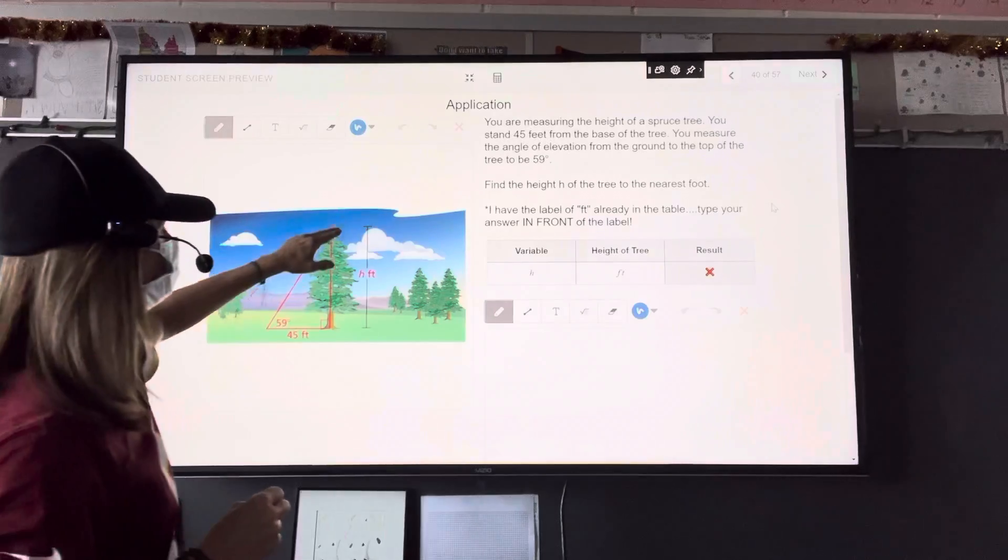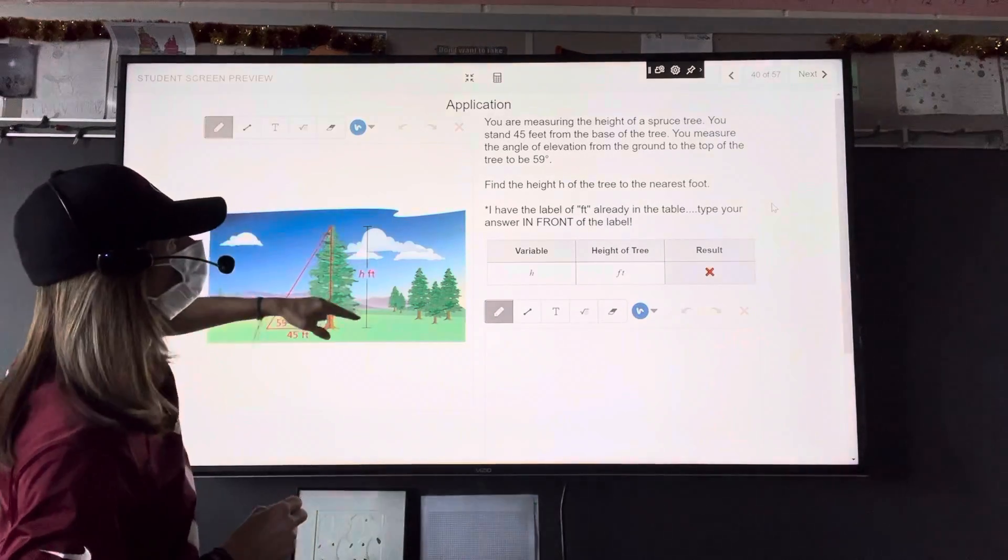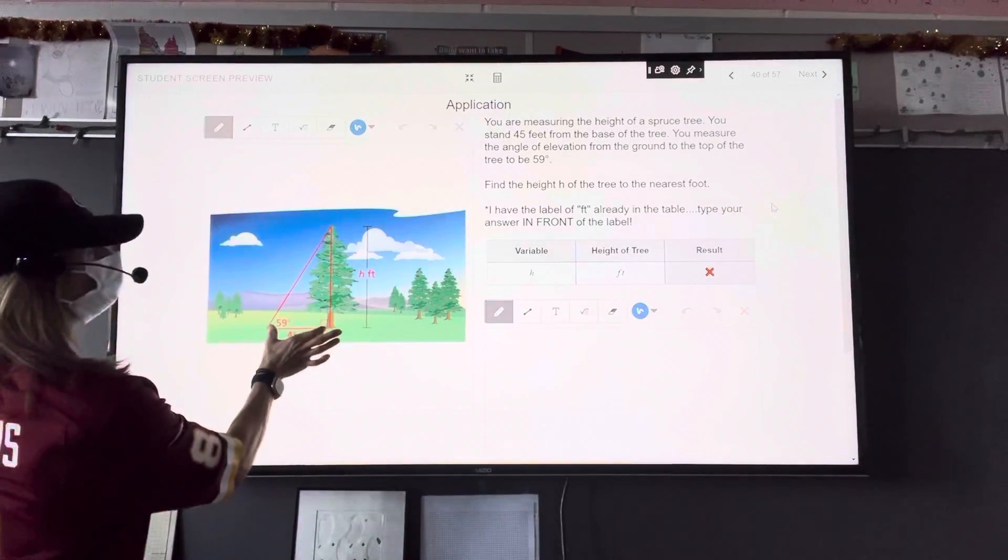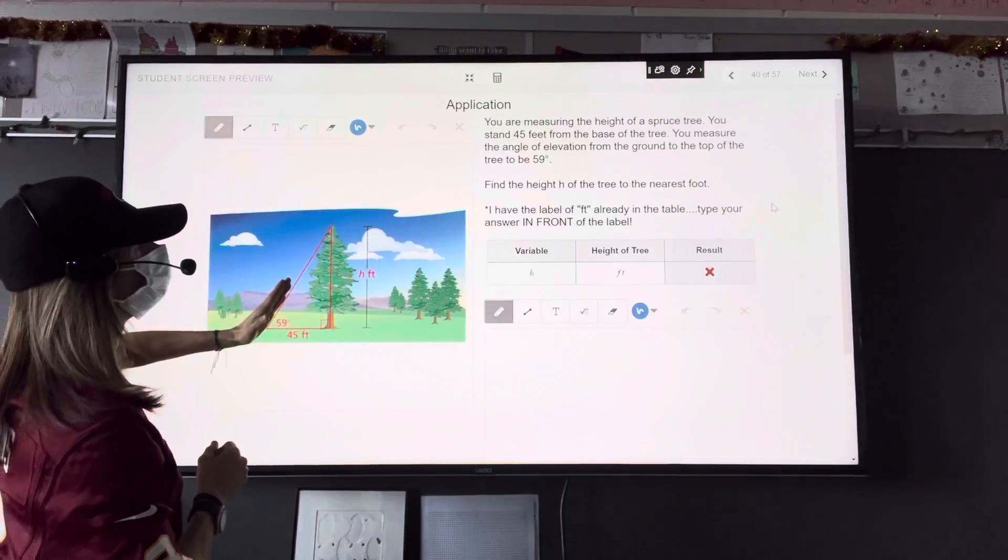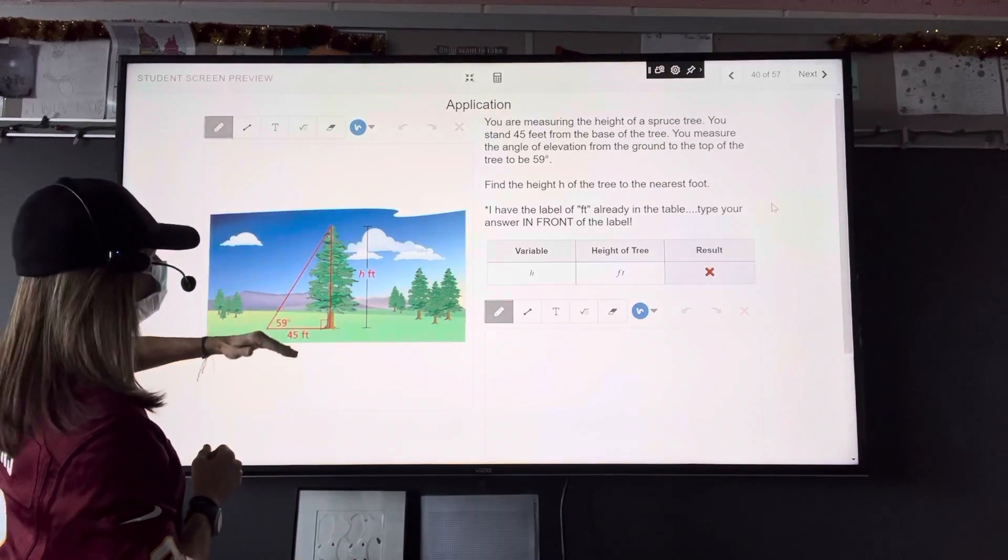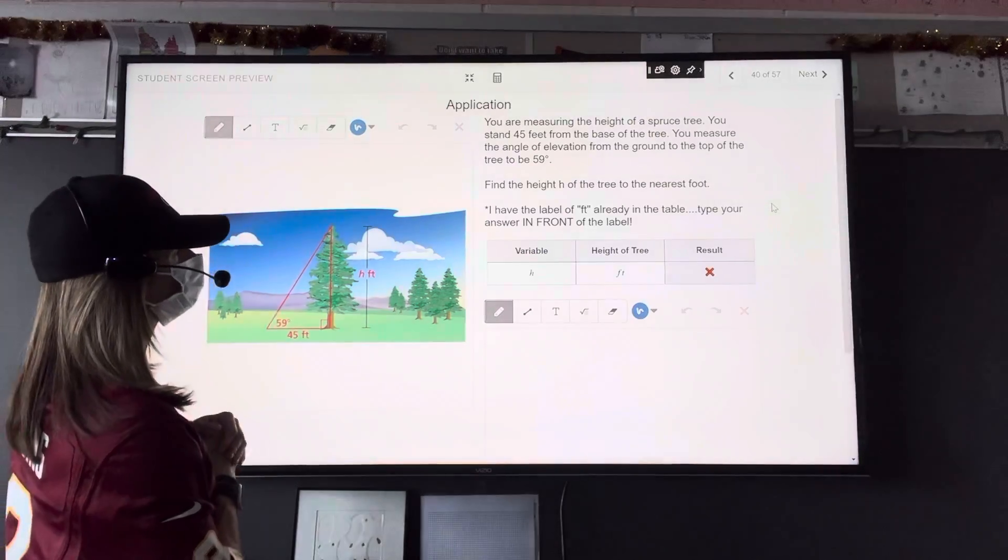You're measuring the height of a spruce tree. So there's our H. You stand 45 feet from the base of the tree. You measure the angle of elevation, that's looking up, from the ground to the top of the tree to be 59 degrees. Find the height of the tree to the nearest foot.